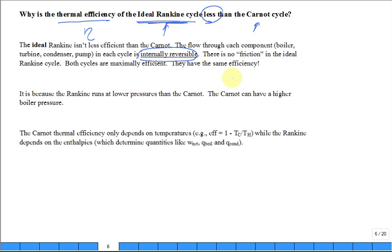Yeah, that statement's true. Hence, there's no friction in the ideal Rankine cycle. Is that statement true? Is it true? Yeah. Hence, both cycles are maximally efficient. They have no friction, no irreversibilities. They're maximally efficient. Does that sound reasonable? Hence, they have the same efficiency. Do you agree? Is this good or not good?